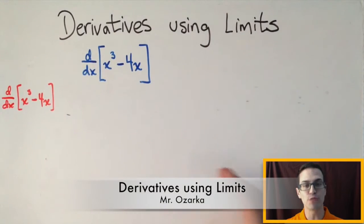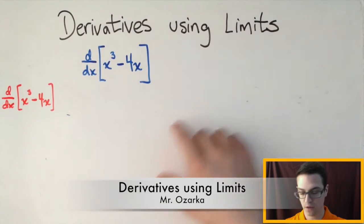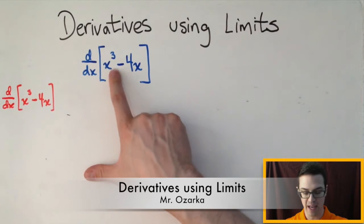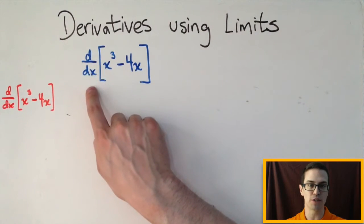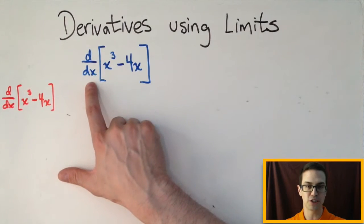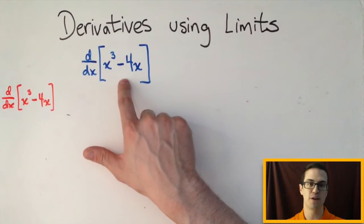Alright, so this is going to be a video about finding derivatives using limits. Okay, so we have this function right here, x cubed minus 4x, and I want to find the derivative of it. That's what this d over dx means, so it's saying differentiate or find the derivative of this function.